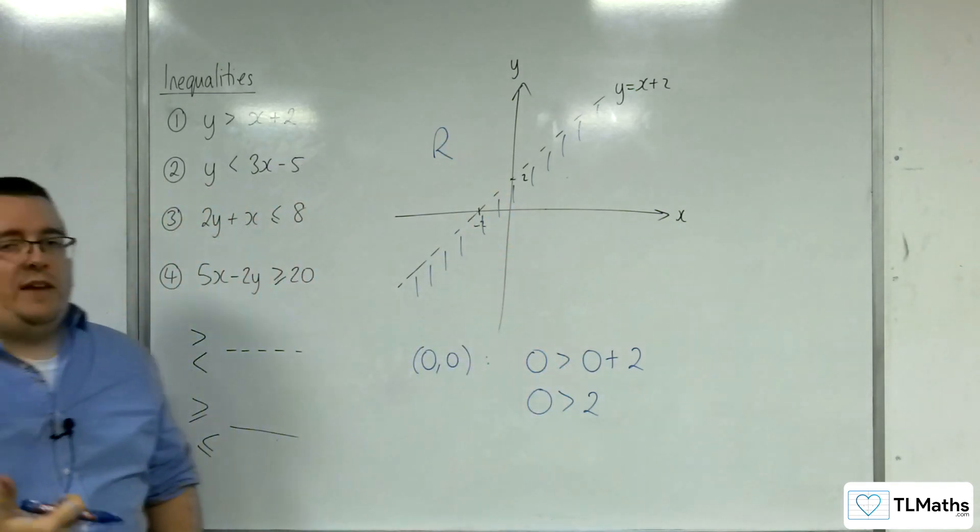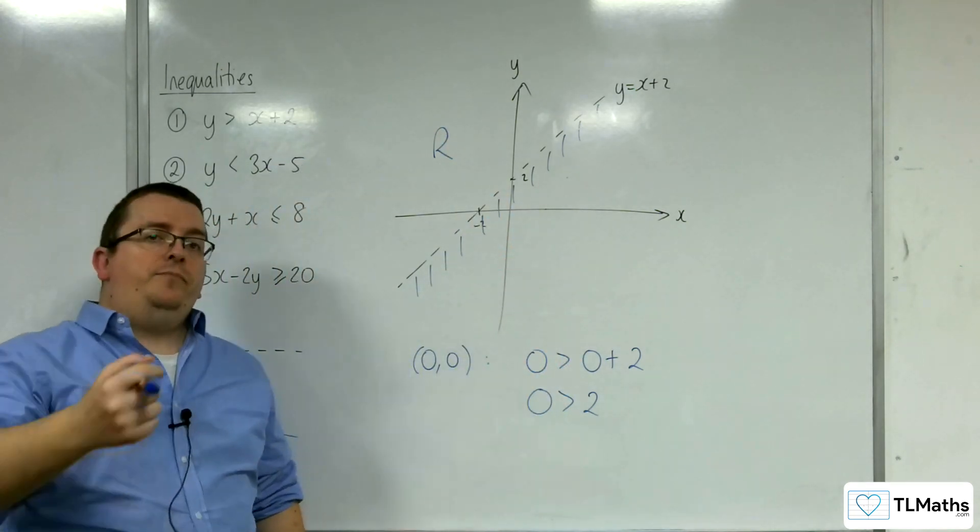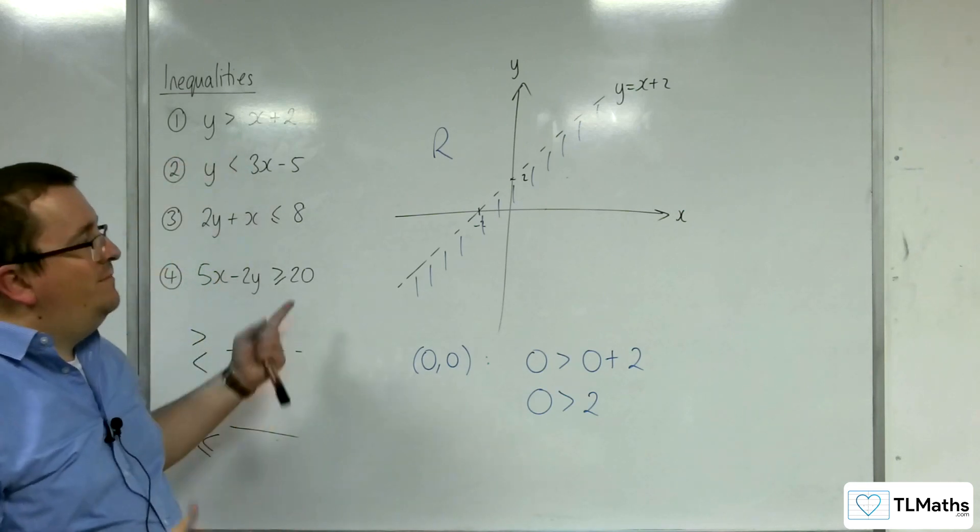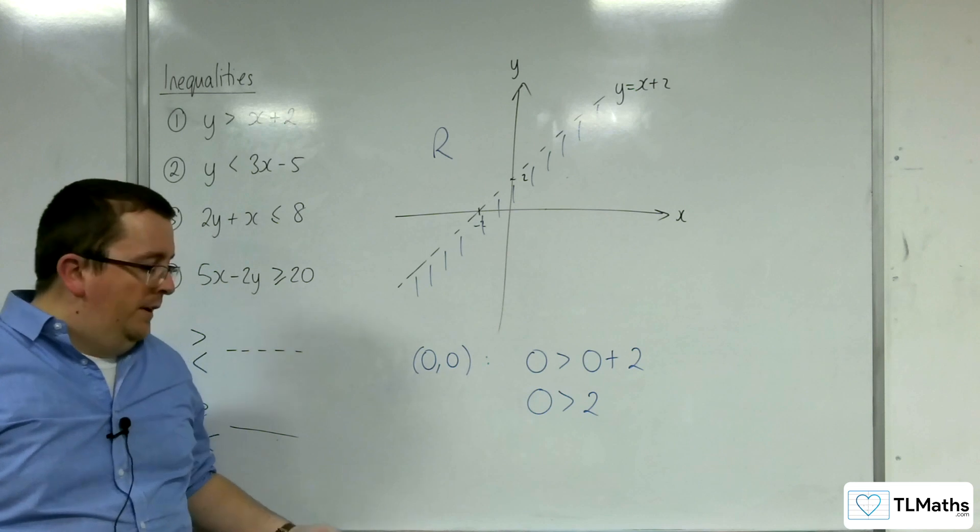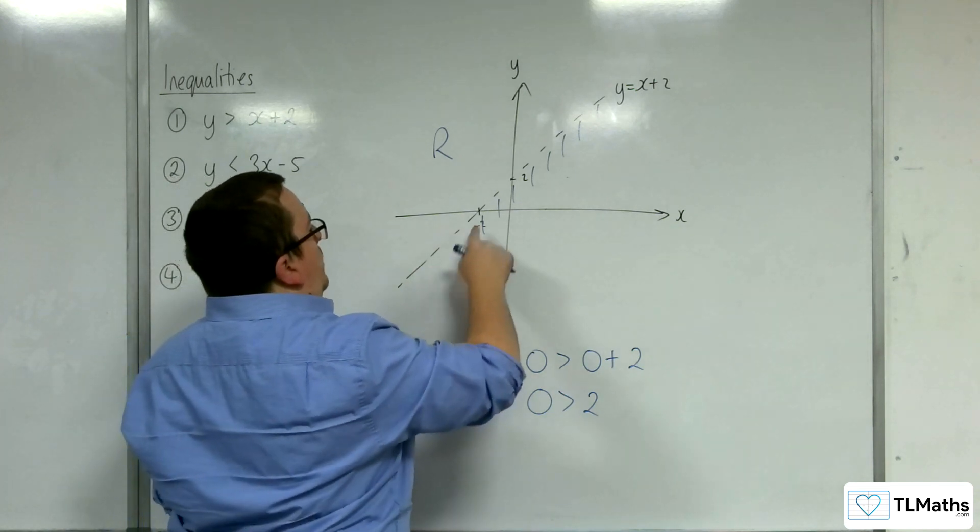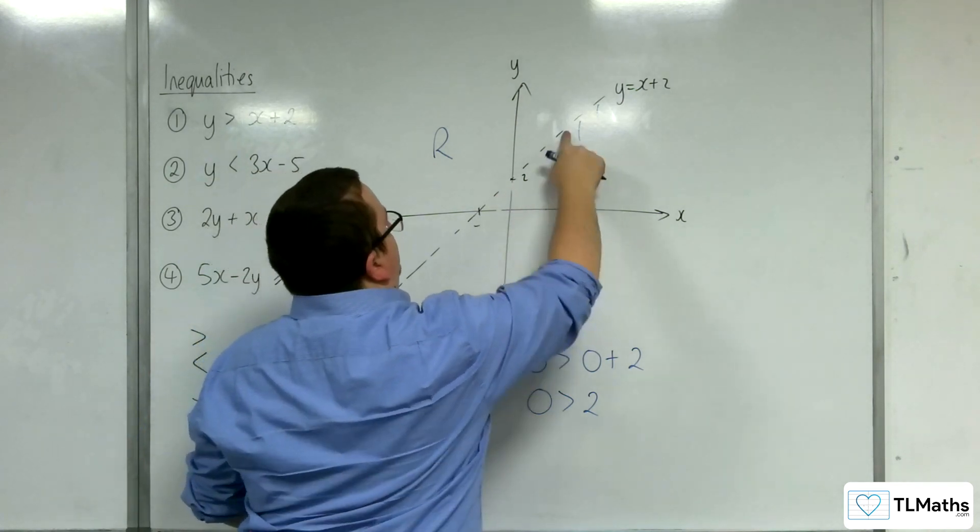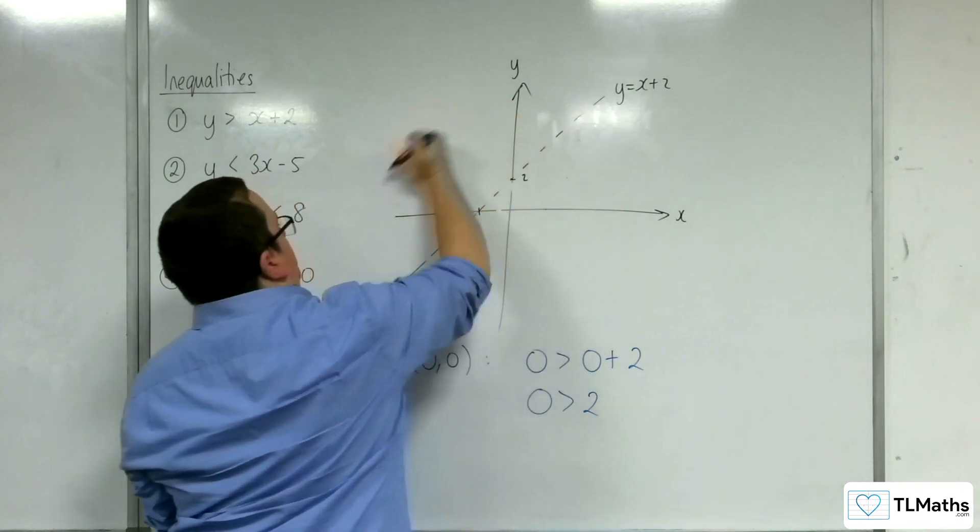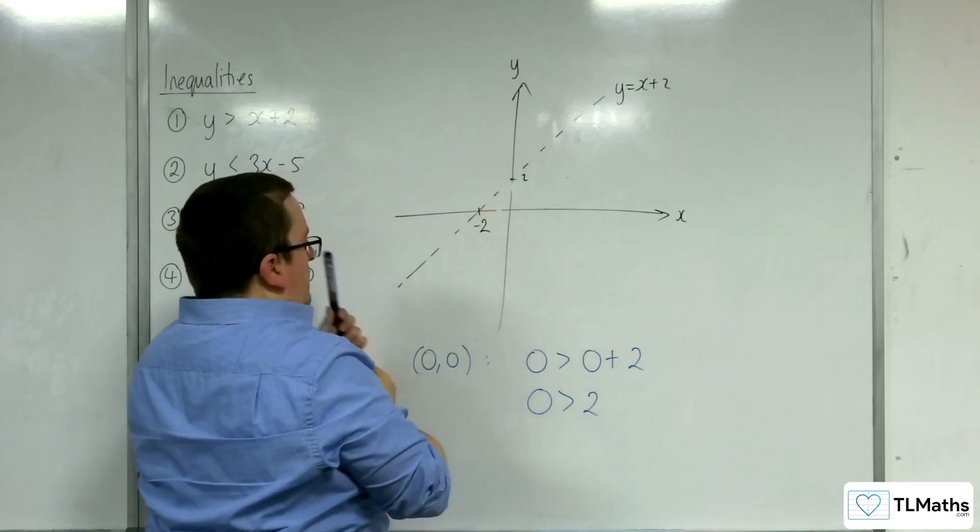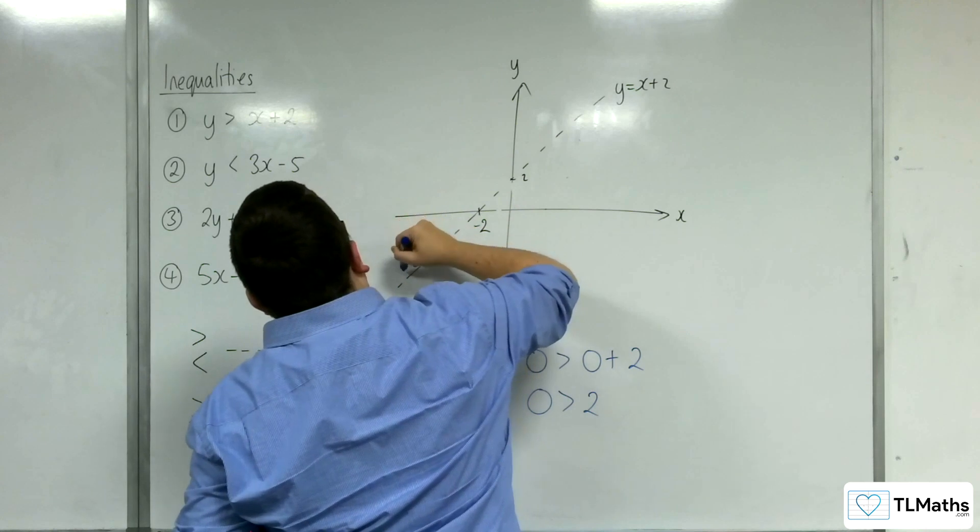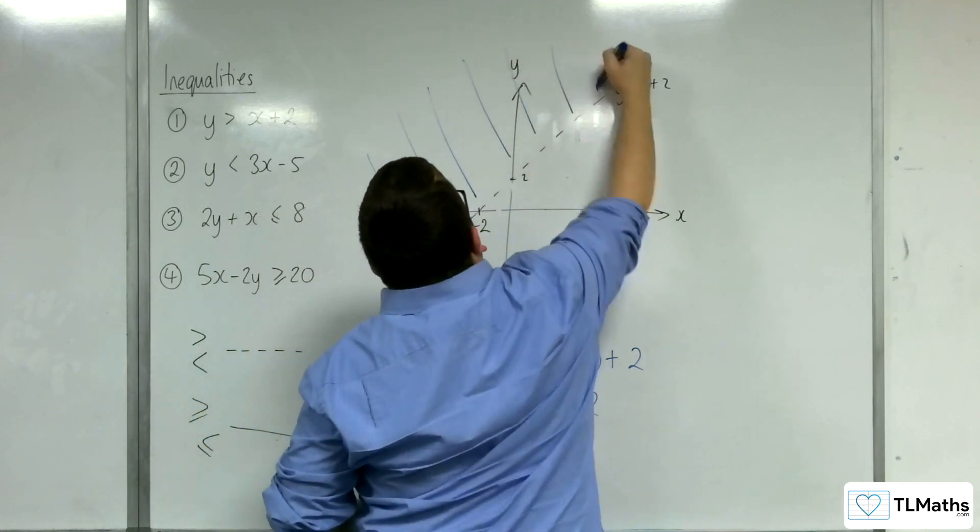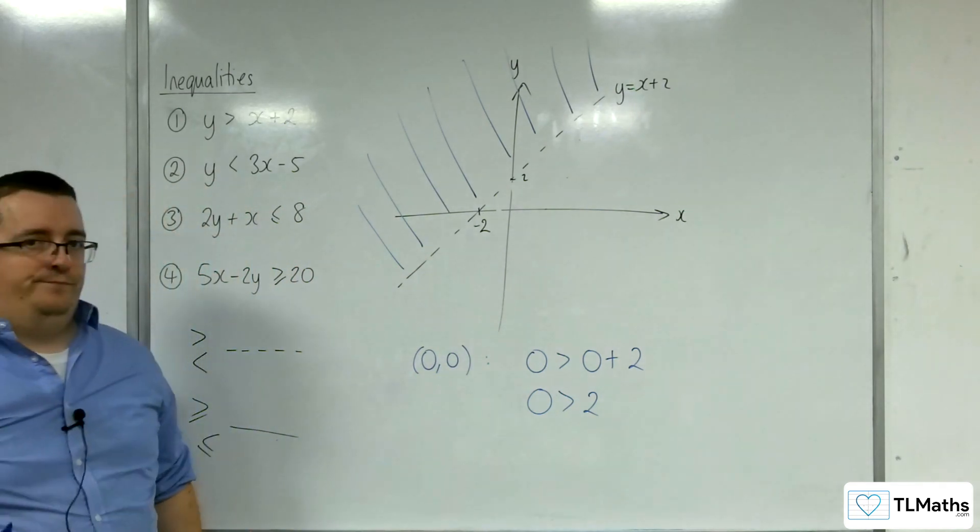Now, if the exam question had said, shade in the region that's satisfied by that inequality, then you kind of really haven't. You've shaded the bit that you don't want. So, the alternative is that actually this is the region I want. So, that is the region I would shade.